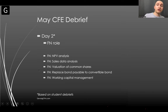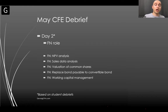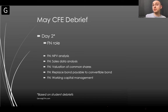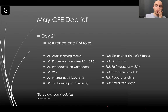For finance, we had a very big complex NPV question, a sales data analysis, a valuation question for common shares, something related to bond payable versus convertible bond and how to replace it, and a working capital management question — which comes up very often for the finance role. More or less, all roles were pretty equal except PM, which was really tough because the AOs were very tricky and hard to understand what exactly was being asked.